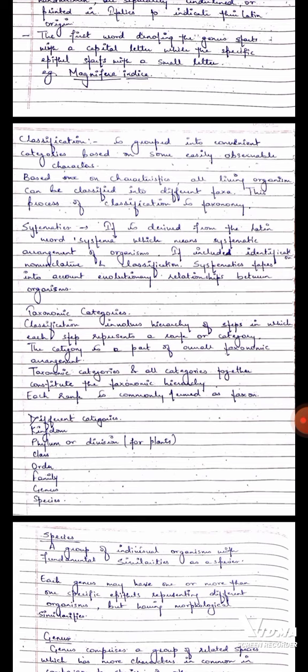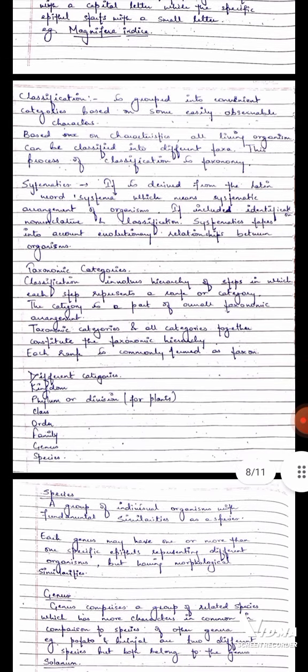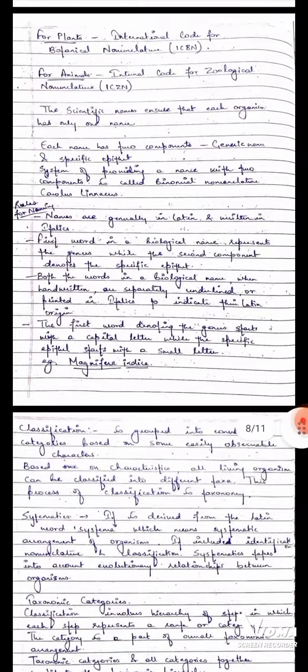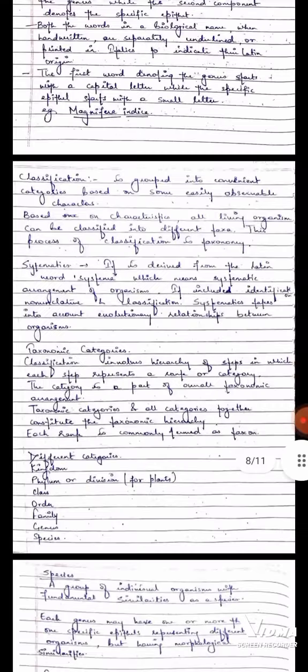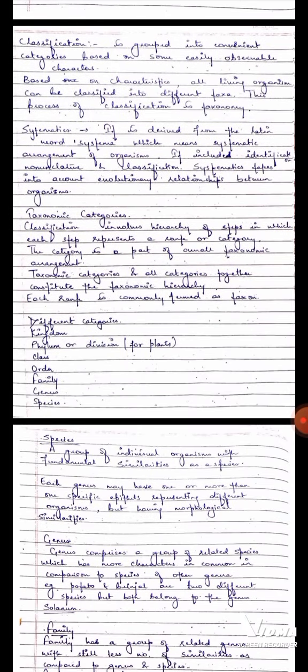First is kingdom. Second is phylum or division. Third is class. Fourth is order. Fifth is family. Sixth is genus. And the seventh is species. We always go from down to upwards. First we will talk about species.